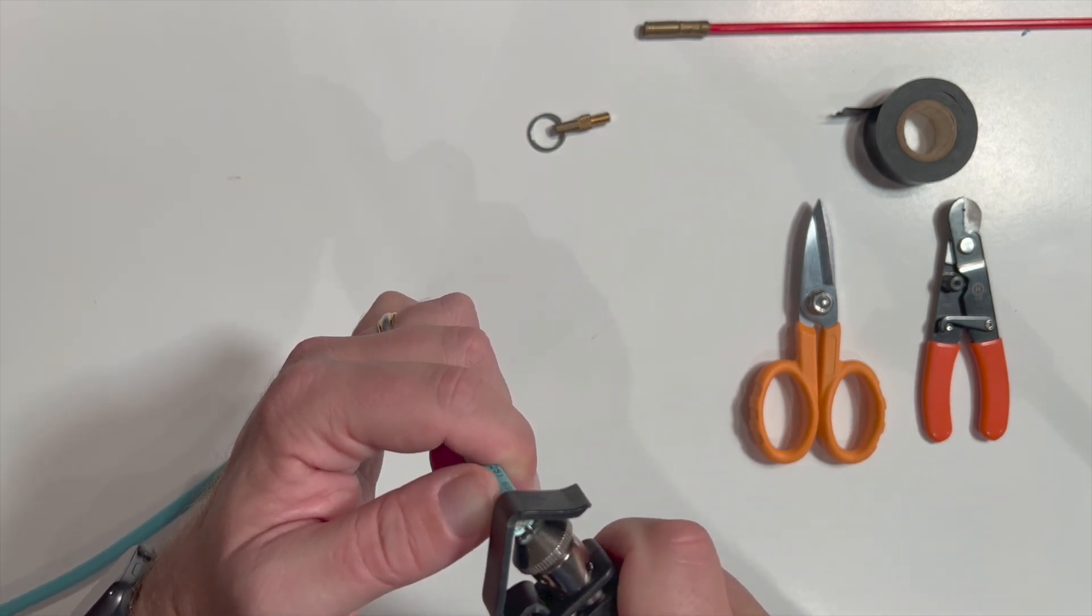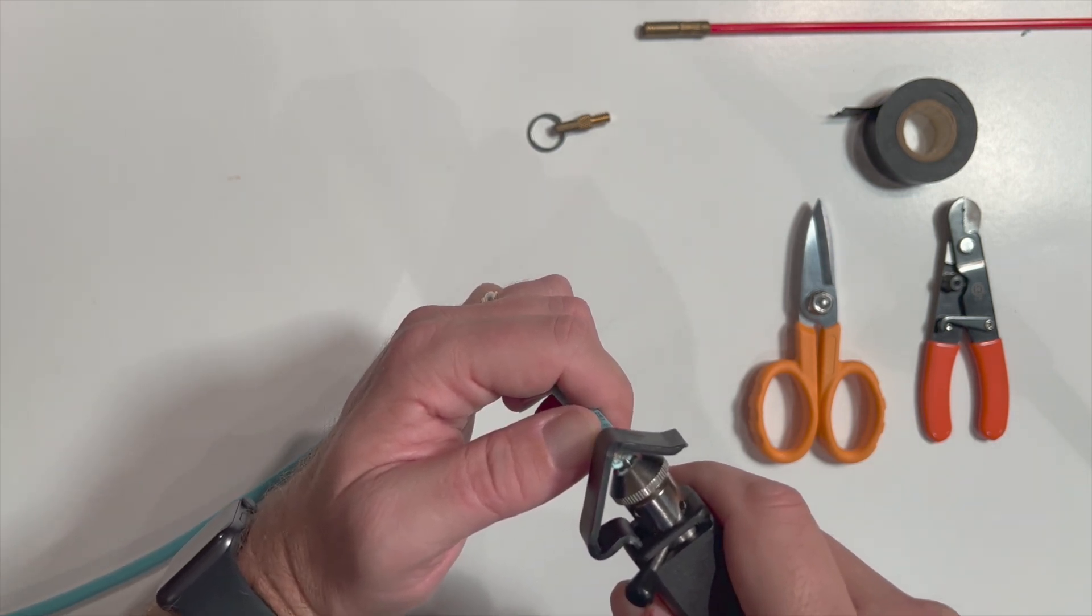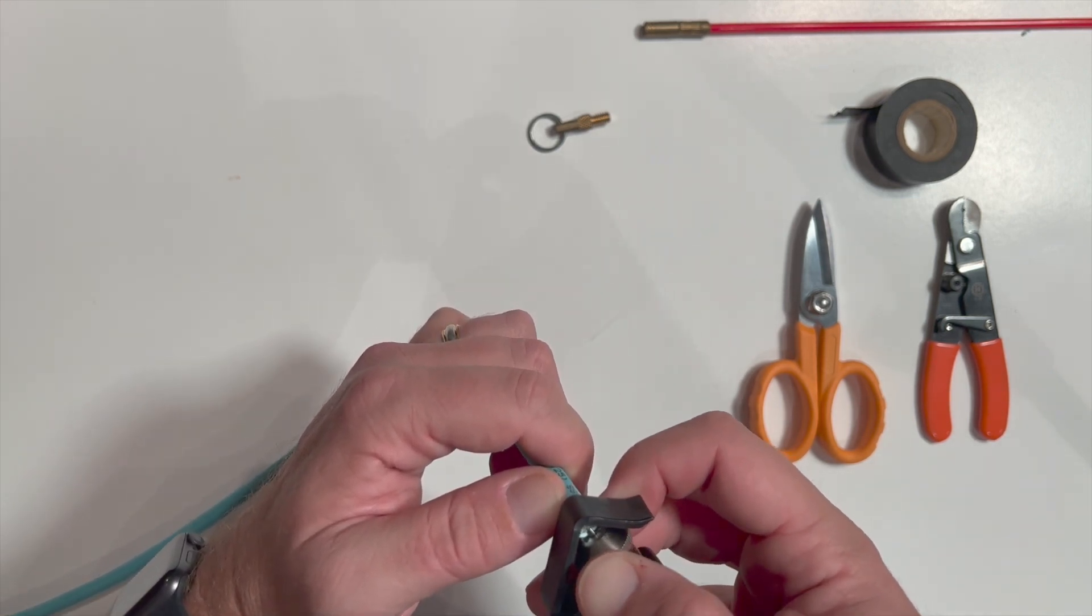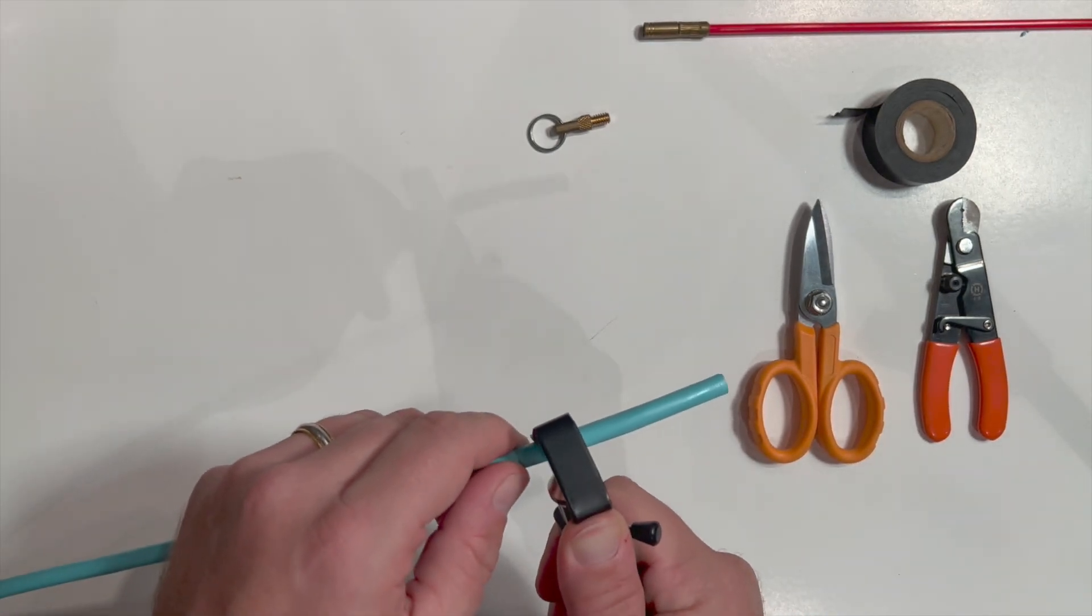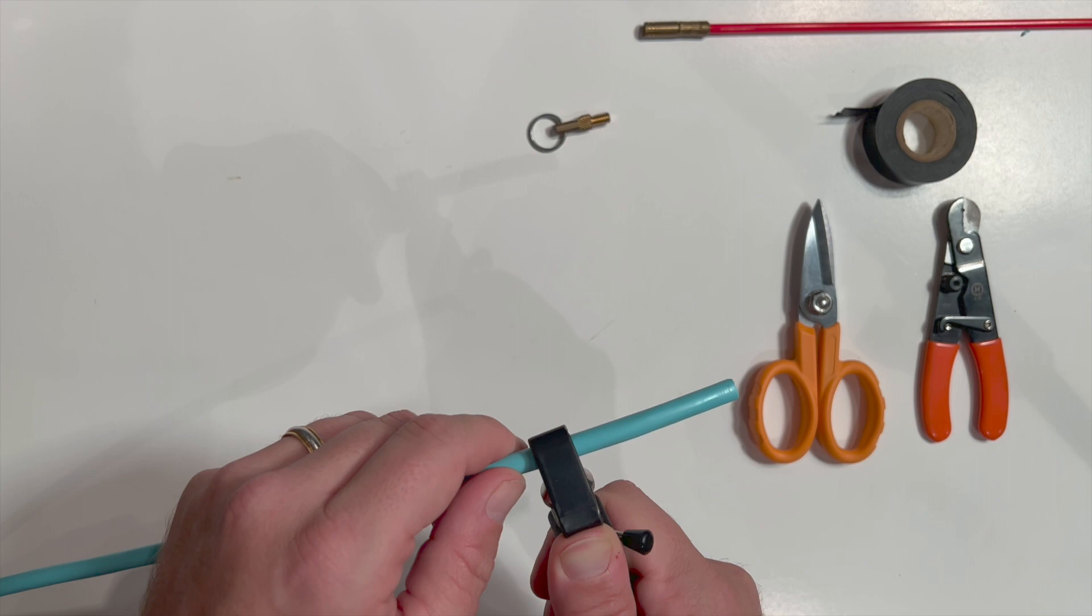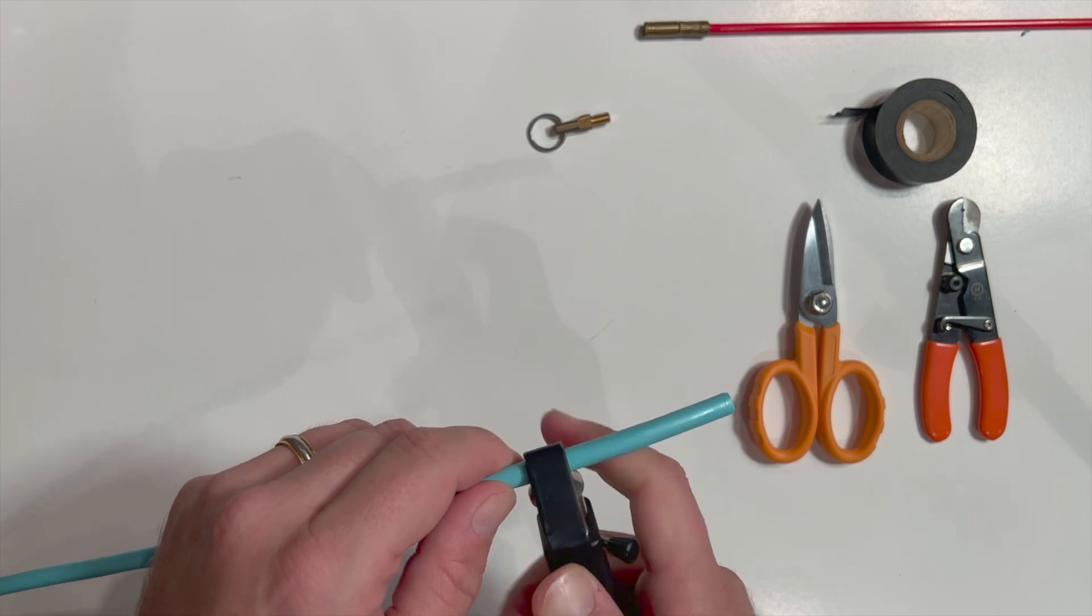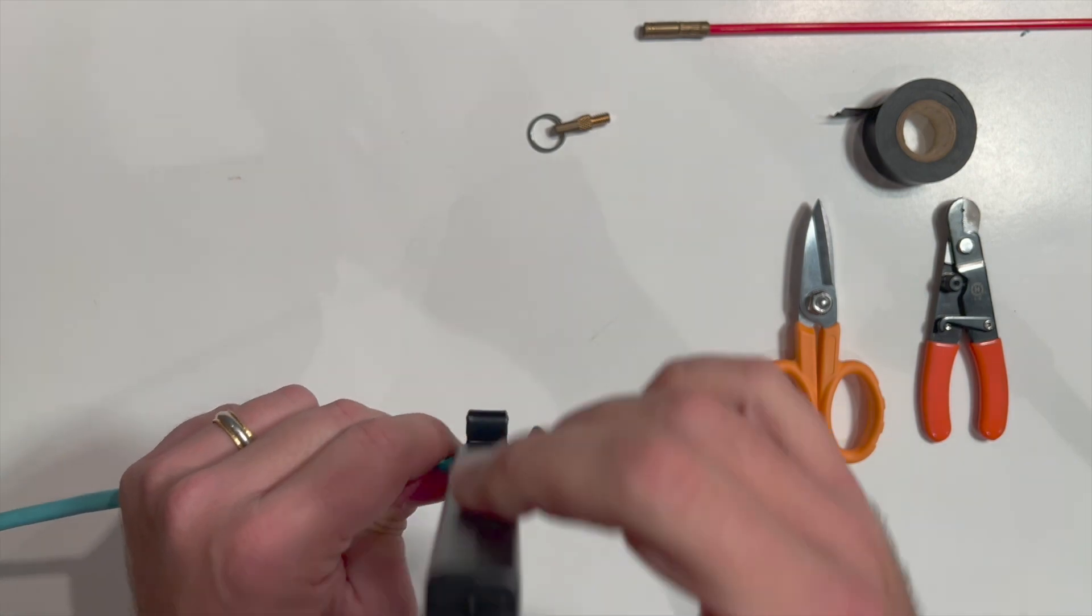Taking the radial slitting tool, place it over the outer jacket at about 2 inches or 50 millimeters from the end of the cable. Apply a small amount of pressure onto the end of the slitting tool in order to make sure the blade penetrates the jacket and rotate the tool a couple of times.